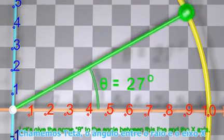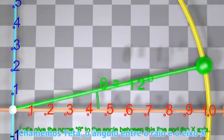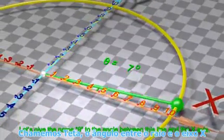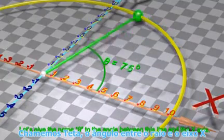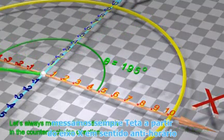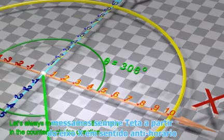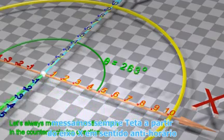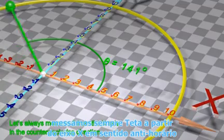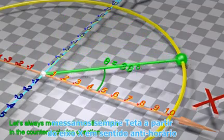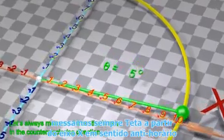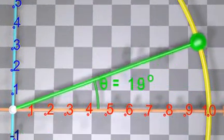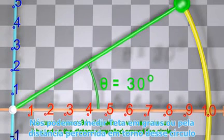Let's give the name θ to the angle between this line and the x-axis. Let's always measure θ from the x-axis in the counter-clockwise direction. We can measure θ in degrees, or we can measure it based on the distance traveled around the circle.